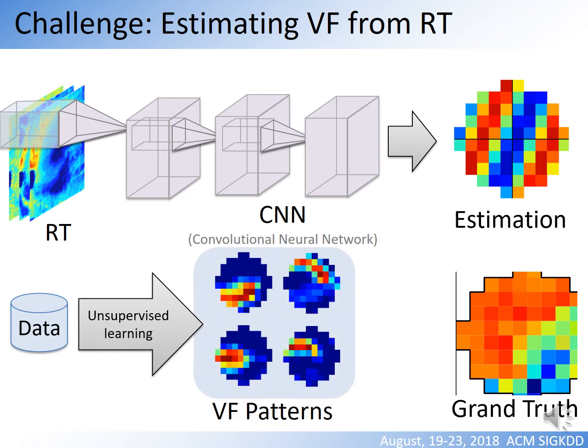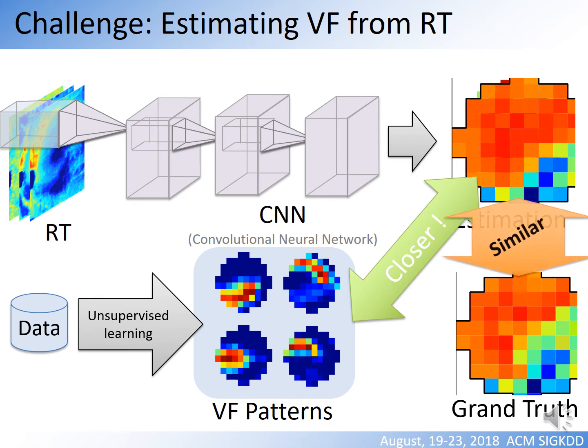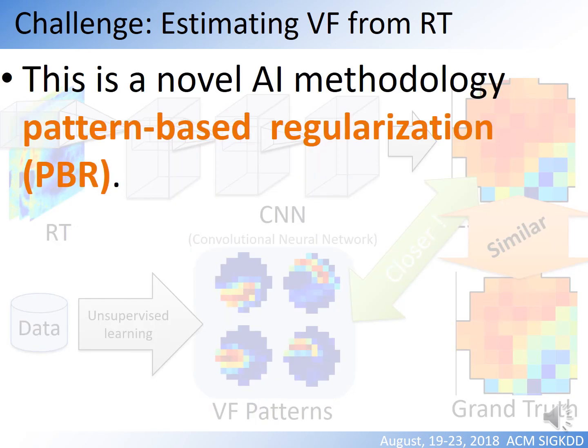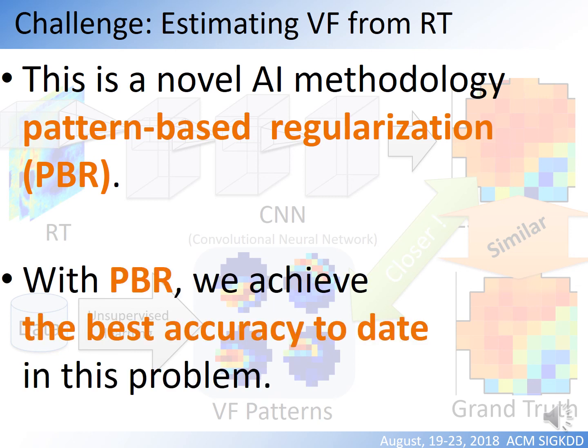When we train a CNN, we regularise the CNN so that its output falls as close as possible to the visual field patterns. This is a novel AI methodology called pattern-based regularisation, or PBR for short. With PBR, we successfully achieve the best accuracy to date with this problem.